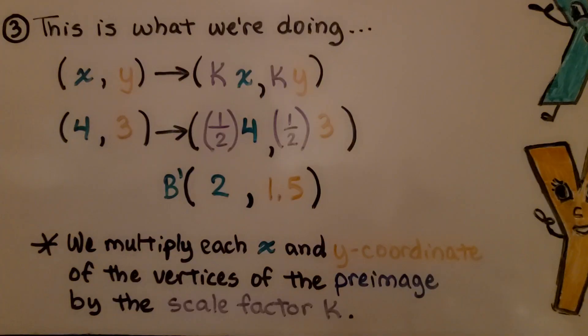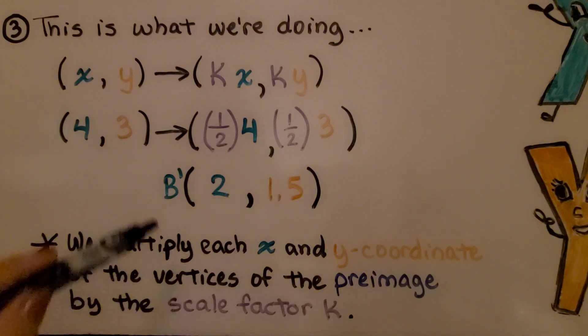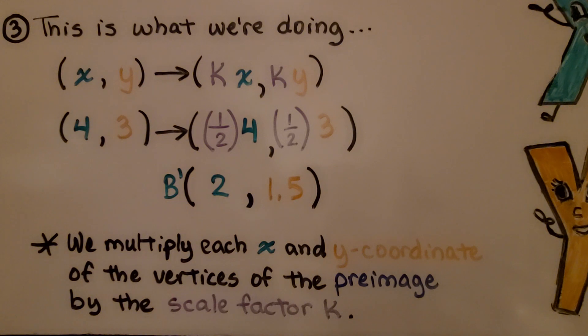So this is what we're doing. If we know that on the preimage the vertex B is at 4 for x, 3 for y, we multiply the 4 times 1/2 and the 3 times 1/2. We know B prime is at 2, 1.5.